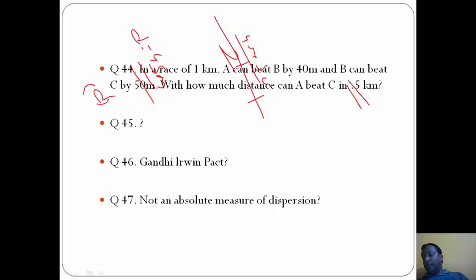In a half kilometer race, this distance becomes half, so 90 by 2, that is 45 meters. Answer here will be D. Question 45 is not clear, I think it's wrong, so I have left it.